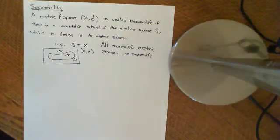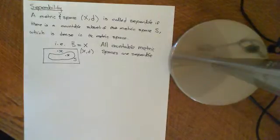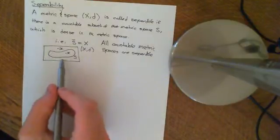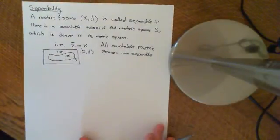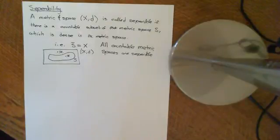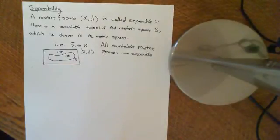In the first video we gave the definition of separability. A separable metric space is one in which there exists a subset S — which doesn't necessarily need to be a proper subset, i.e. it could be the whole space itself — which is dense within the metric space X. So that's the definition of separability of a metric space.